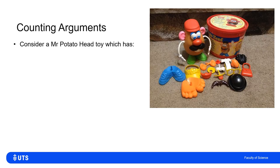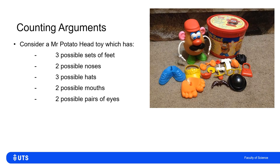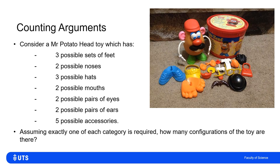Consider nobody's favourite character from Toy Story, Mr. Potato Head. The Mr. Potato Head bucket has various different body parts and accessories. Let's say this bucket has three possible sets of feet, two possible noses, three possible hats, two possible mouths, two possible pairs of eyes, two possible pairs of ears, and five possible accessories. If we had to have exactly one from each category — no two sets of feet, no zero feet — how many configurations of the toy are there?